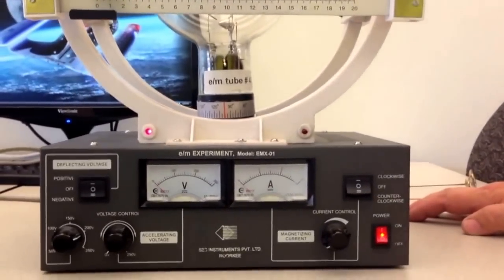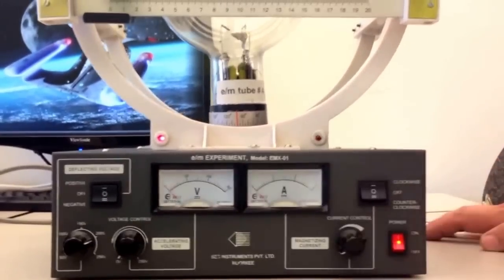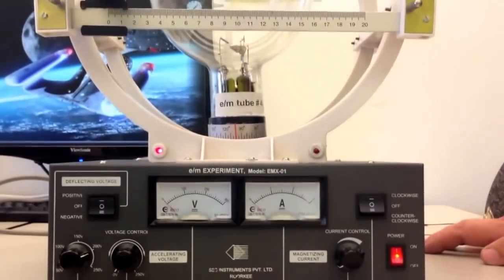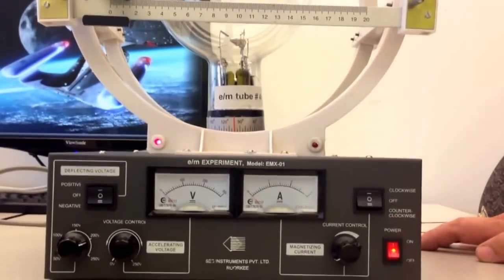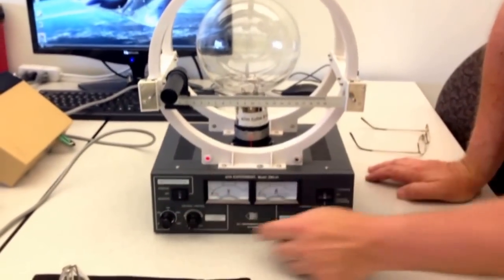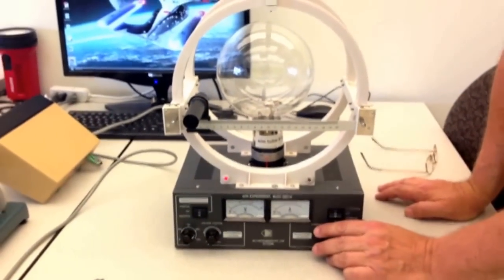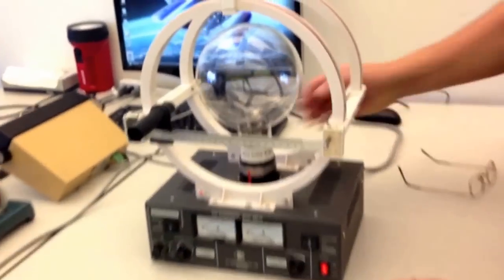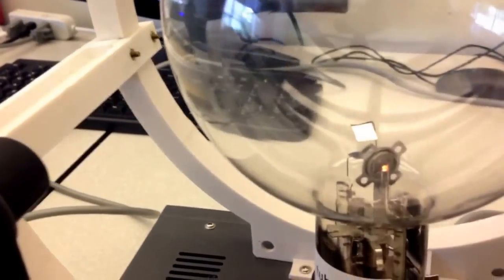In this vacuum tube there are two plates called the anode and the cathode. Because the power supply we are going to be applying is a DC voltage source, one of these plates, the anode, will be positive and the other plate will be negative. Whenever you turn on the power to a vacuum tube, before it can work properly, it needs to be heated up. If you look very carefully, there is an orange glow at the cathode end. That orange glow is the heating element. It will allow us to easily strip electrons from the cathode end and accelerate them to the anode end.